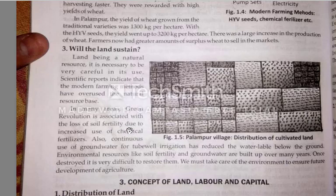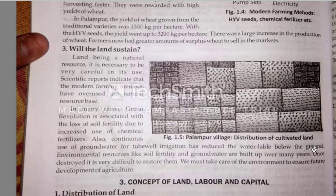When people started using chemical fertilizers in the fields, the soil fertility also decreased and was lost. The continuous use of groundwater for tube well irrigation has reduced the water level below the ground.